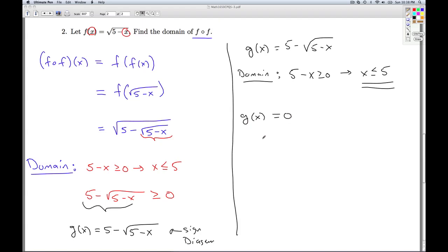The other thing we need to do to make the sign diagram is find the zeros of the function. So we're going to set g(x) equal to 0. We're going to set 5 minus the square root of 5 minus x equal to 0. I can add that square root to both sides. And then I can square both sides. So 5 squared is 25. If you take a square root and then square it, you're just left with this.